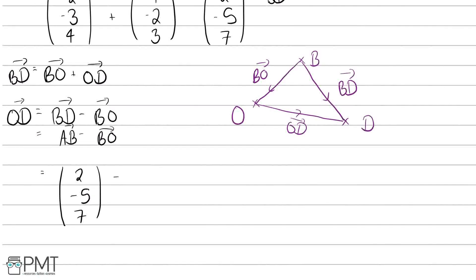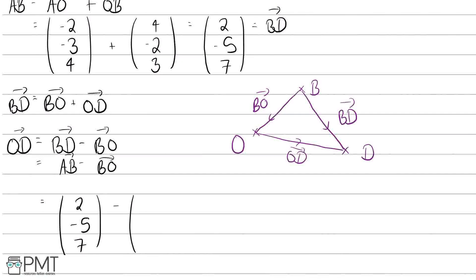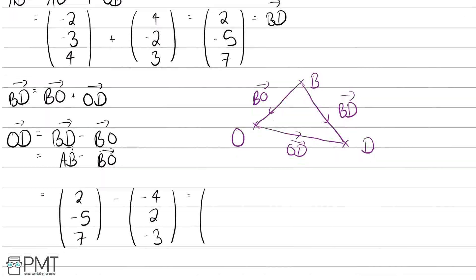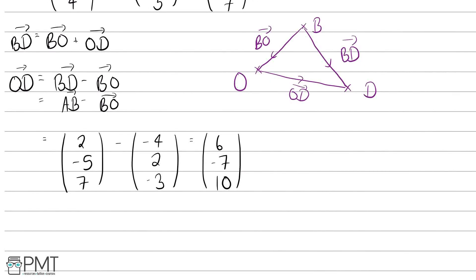Writing this in column vector form: AB is (2, −5, 7). BO is the reverse of OB. Since OB is (4, −2, 3), BO must be (−4, 2, −3). So OD equals (2, −5, 7) minus (−4, 2, −3). Computing: 2 minus minus 4 is 6, minus 5 minus 2 is minus 7, and 7 minus minus 3 is 10. So the position vector of D is (6, −7, 10).